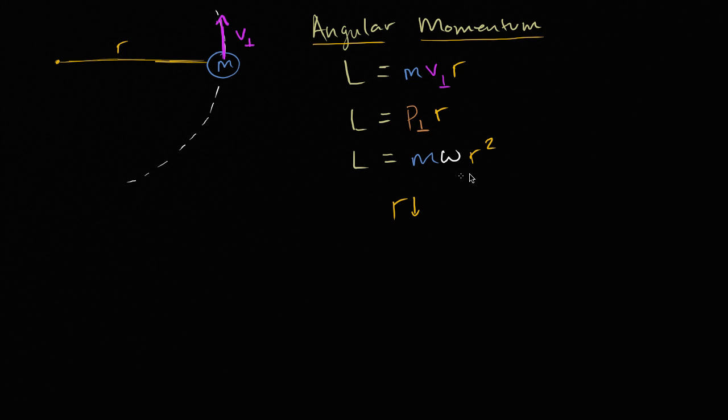well, if this thing is going to be constant because there's no torque being applied, well, their mass isn't going to change, so they'll just spin faster. And you do the opposite, the opposite would be happening.